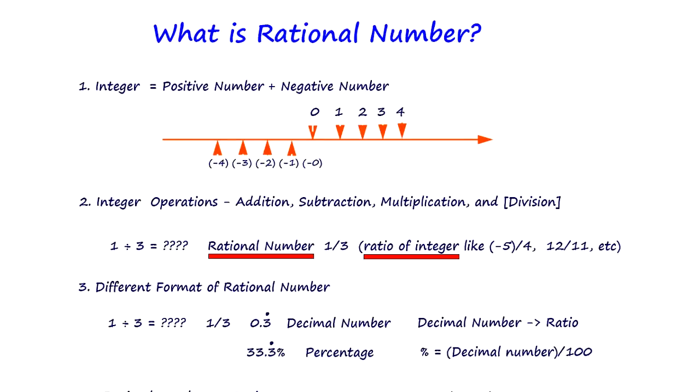What is rational number? Well, we start with integer. Integer is made of positive number and negative number.